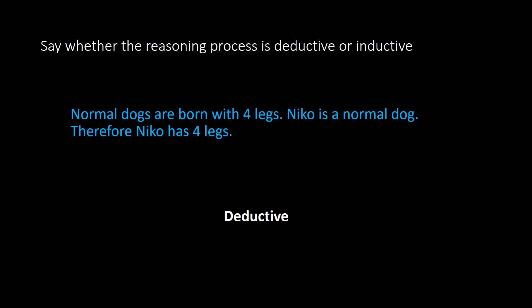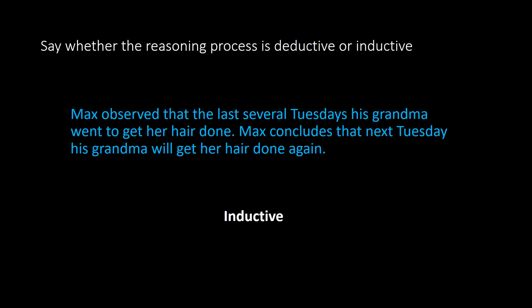In this case, it's a law of nature. In this example, we have inductive reasoning. Max observed that the last several Tuesdays his grandma went to get her hair done, so he concludes that next Tuesday his grandma will get her hair done again. Notice that Max is observing and he's coming to a conclusion based off past observation. The key word here is observed, which will signify that we have inductive reasoning.